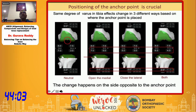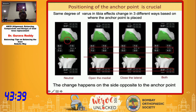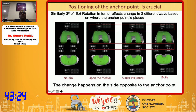Positioning of the anchor point is crucial. The anchor point is a pivot point on which the axis is moved. If you move it to the lateral side and put two degrees of varus, that will open the medial space. If you anchor on the lateral side and put varus again, it closes the lateral side. If you put the anchor point in the center, it changes both sides equally. So three degrees of external rotation of the femur affects the gaps in three different ways depending on where the anchor point is placed.